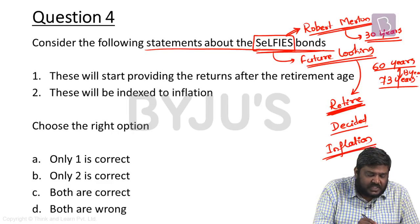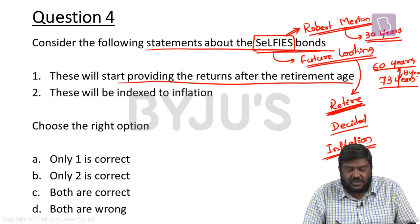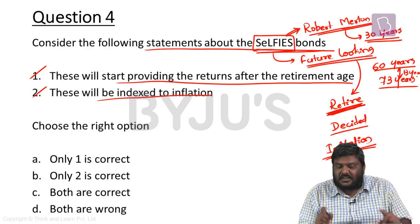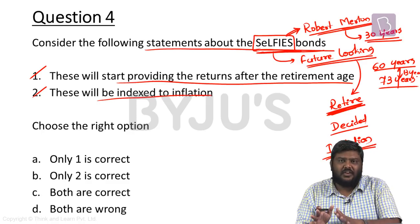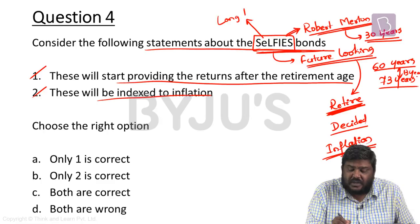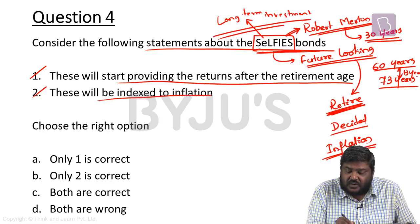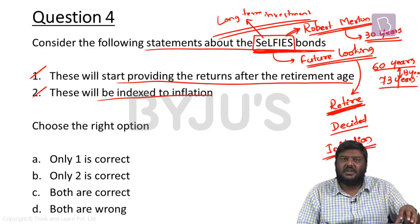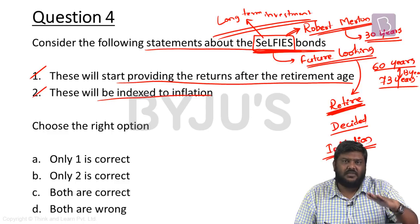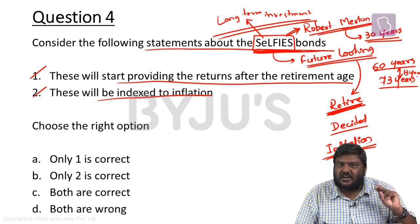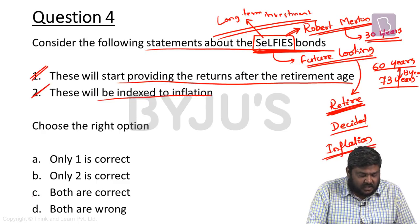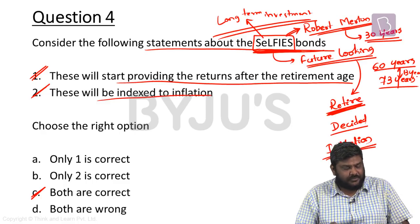For the fourth question: first statement - selfie bonds start providing returns after retirement age (correct); second statement - they will be indexed to inflation (correct). So both statements are correct, Option C is the right answer. Two descriptive questions: first, the government needs to implement structural reforms in the agriculture sector to double farmers' income by 2022 - while some reforms have been implemented in the last three years, many are not structural in nature. Second, though new direct tax data shows improvement in receipts, further reforms are needed to make Indian taxation more progressive.